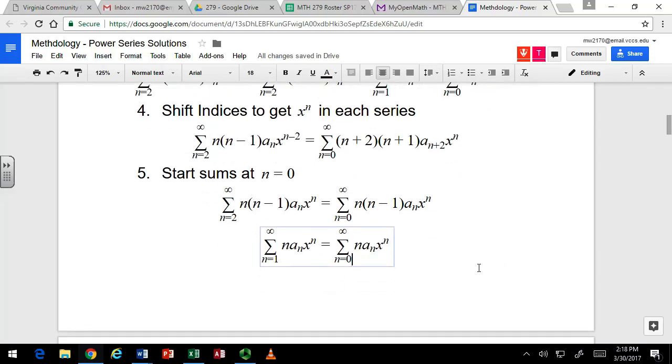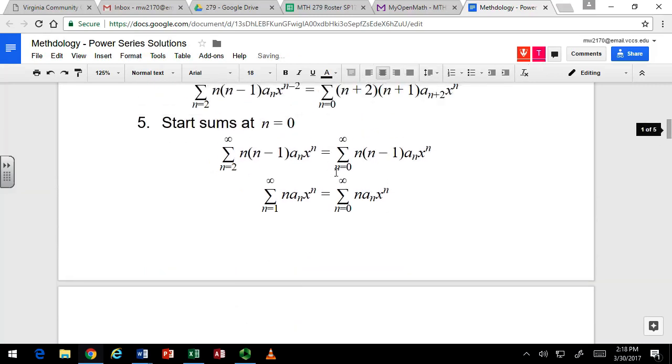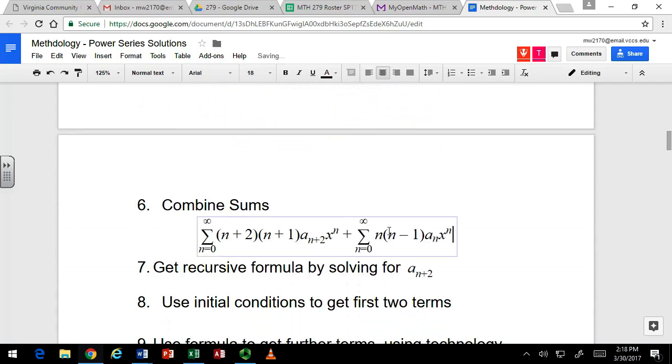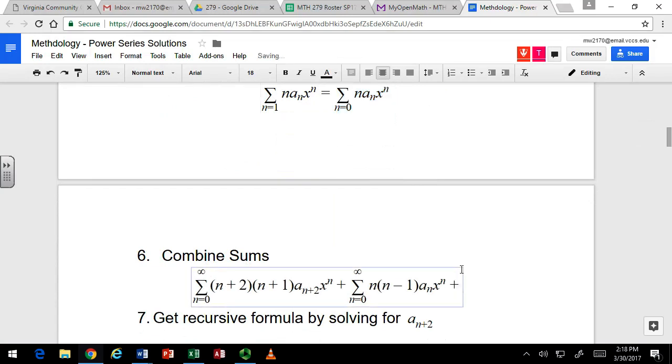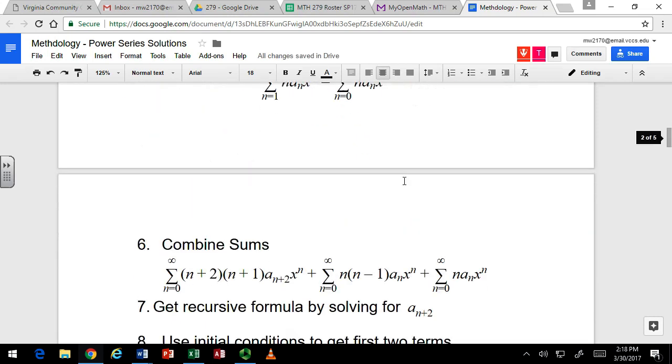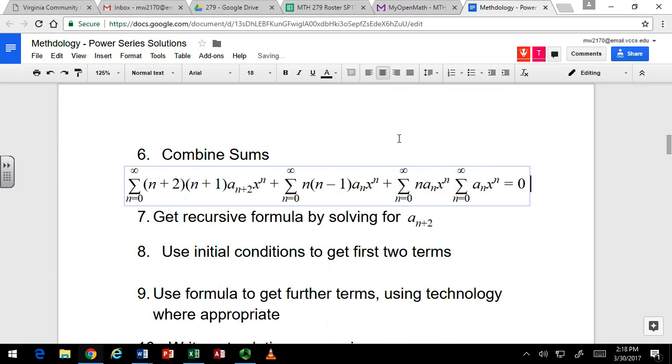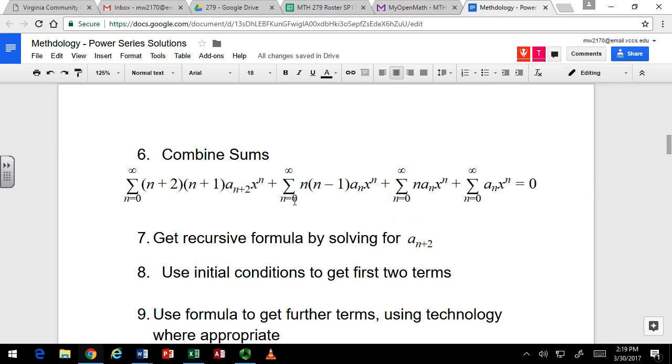Alright, let's put it all together because we've done some changes to these. Here's the first one, and I believe this is the second, and this is the third, and this is the fourth. There's our four sums. They all have x to the n. They all start at n equals 0, which means we can combine them and factor off that x to the n.